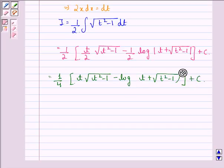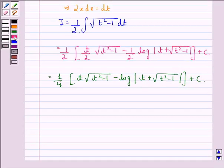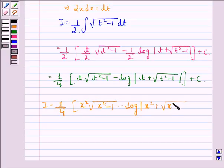Now here we see that with the log we have mod t plus square root t square minus 1. Therefore we can say I is equal to 1 by 4 into x square multiplied by square root of x raised to power 4 minus 1 minus log of mod x square plus square root x raised to power 4 minus 1 plus C.